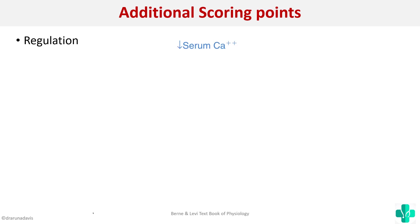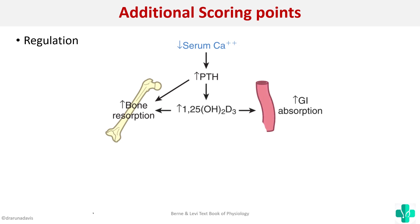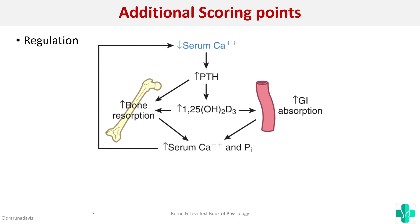Another scoring point is the regulation of parathormone. The primary factor regulating PTH is calcium. When serum calcium decreases, there is increased secretion of parathormone, which acts on bone to cause increased bone resorption and activates vitamin D3 so there is increased reabsorption of calcium and phosphate from the GI tract.